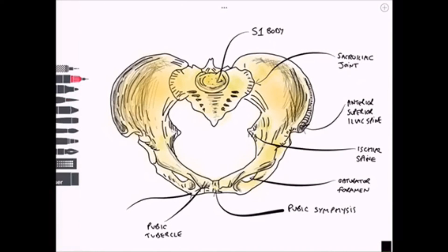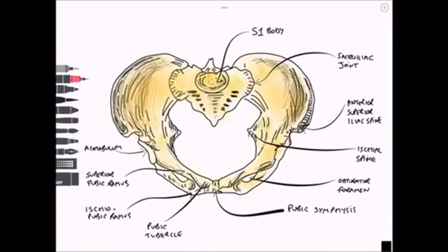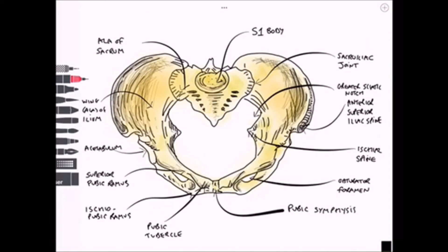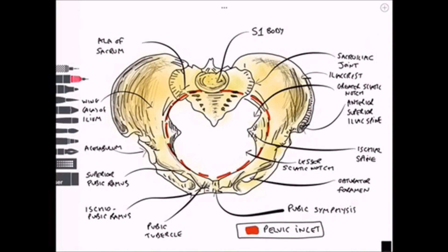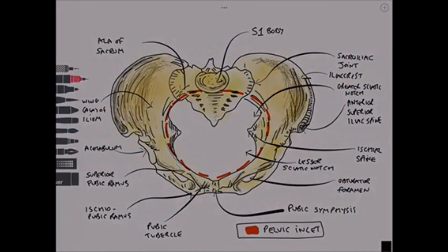The pubic tubercle can be seen once again — we can see the two in close proximity, left and right. The ischiopubic ramus and the superior pubic ramus are also visible. To complete this view, we can see the acetabulum laterally. We can also name the ala of the sacrum, which is a wing-like projection forming the sacroiliac joint, and a concave depression known as the wing of the ilium. The greater and lesser sciatic notches are visible again, as is the iliac crest. Finally, the pelvic inlet is formed by all three pelvic bones forming the arcuate line, the pectineal line, and the pubic crest forming the linea terminalis — this is the pelvic brim separating the true and false pelvis.